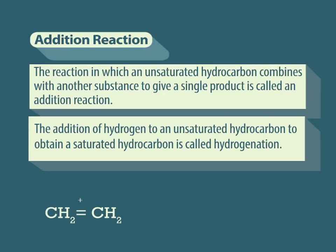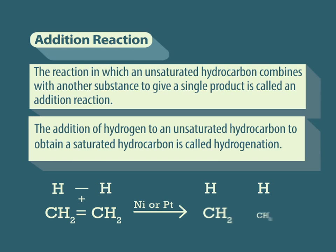For example, ethene and hydrogen when passed over finely divided catalysts such as nickel gives ethane.